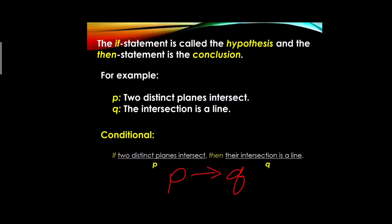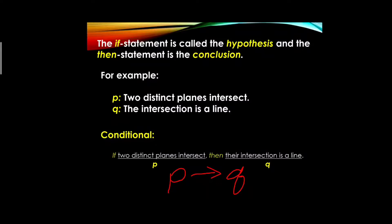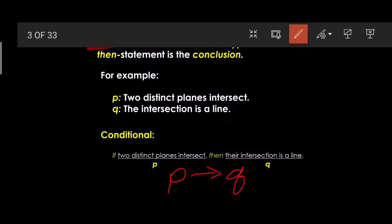Going back to our example, the conditional statement 'if two distinct planes intersect, then their intersection is a line' has a true value, since both the hypothesis (antecedent) and the conclusion (consequent) are true propositions. To illustrate, we can use the corner of a room — walls are examples of planes.